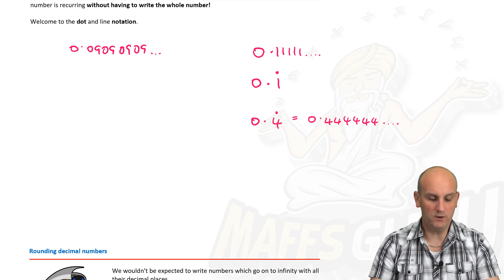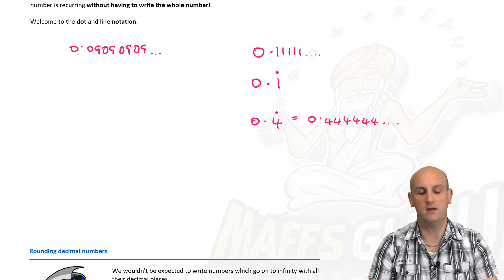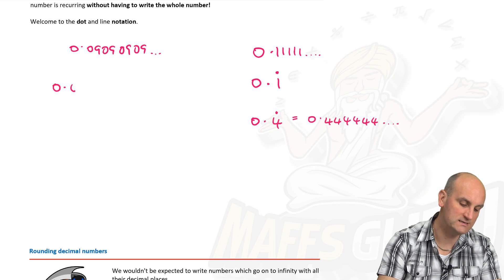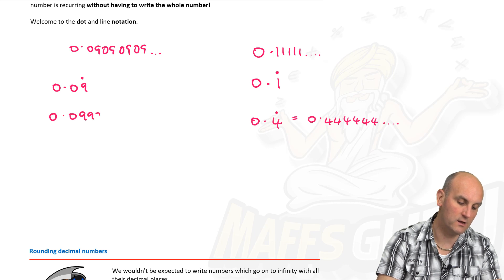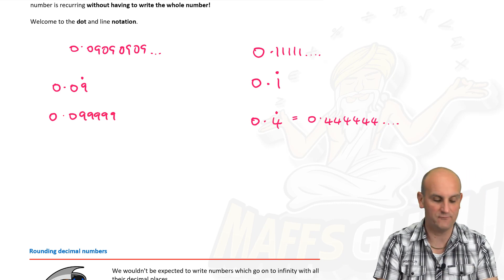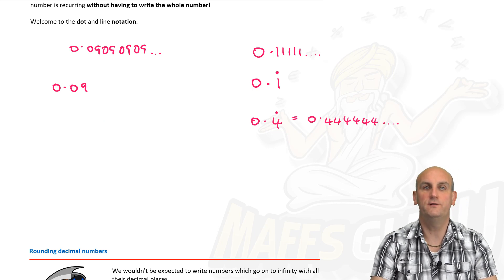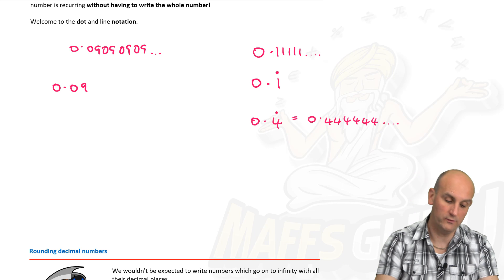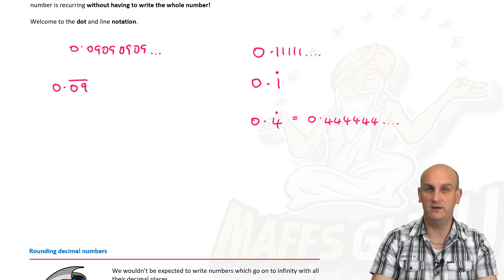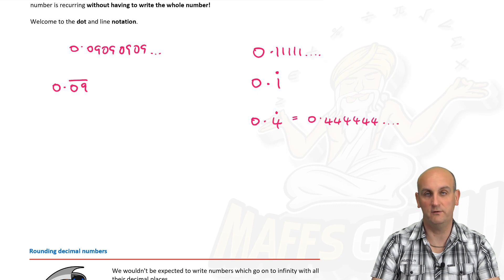For 0.090909..., we can't just put a dot over the 9, because that would mean 0.099999. Instead, we place a line over the repeating block. So 0.09 with a line over the 09 equals 0.09090909 — it tells everybody that block repeats.